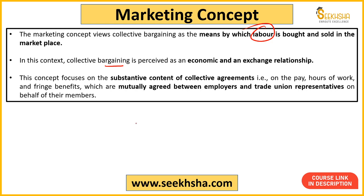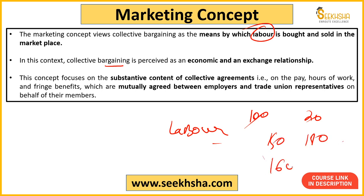For example, under the marketing concept: you go to the market, you need labor. You sit with someone, tell them you need workers. He says he'll work. You ask how much he wants. You offer 100 rupees, he says 200, you negotiate to 150. Whatever fringe benefits employer or trade union representatives set — basically this is an economic exchange relationship where you are defining working conditions.